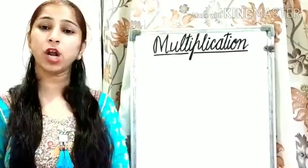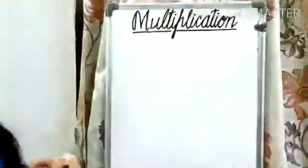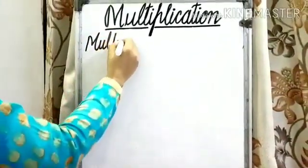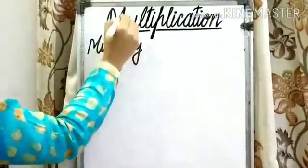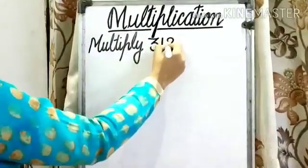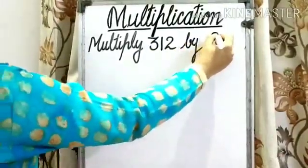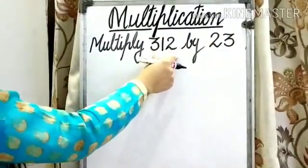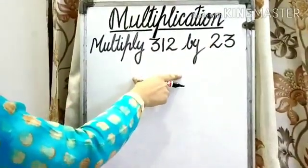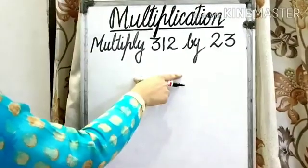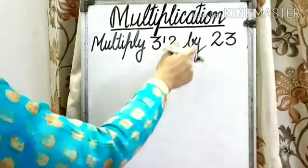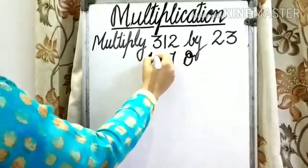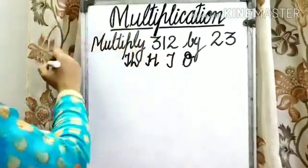So let's understand by solving different examples. The first example is: multiply 312 by 23. First of all, we need to arrange these numbers under the headings of 1s, 10s, 100s, and 1000s. So first of all, write down the headings: 1s, 10s, 100s, 1000s.